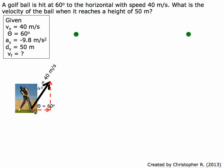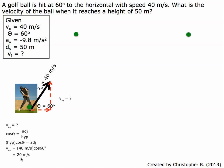We need to find the velocity in the x direction and the velocity in the y direction. For the x direction, using cosine equals adjacent over hypotenuse, the initial velocity in the x direction is 40 meters per second times cosine of 60, which equals 20 meters per second. For the y direction, using sine equals opposite over hypotenuse, the initial velocity in the y direction is 40 meters per second times sine of 60, which equals 34.6 meters per second.